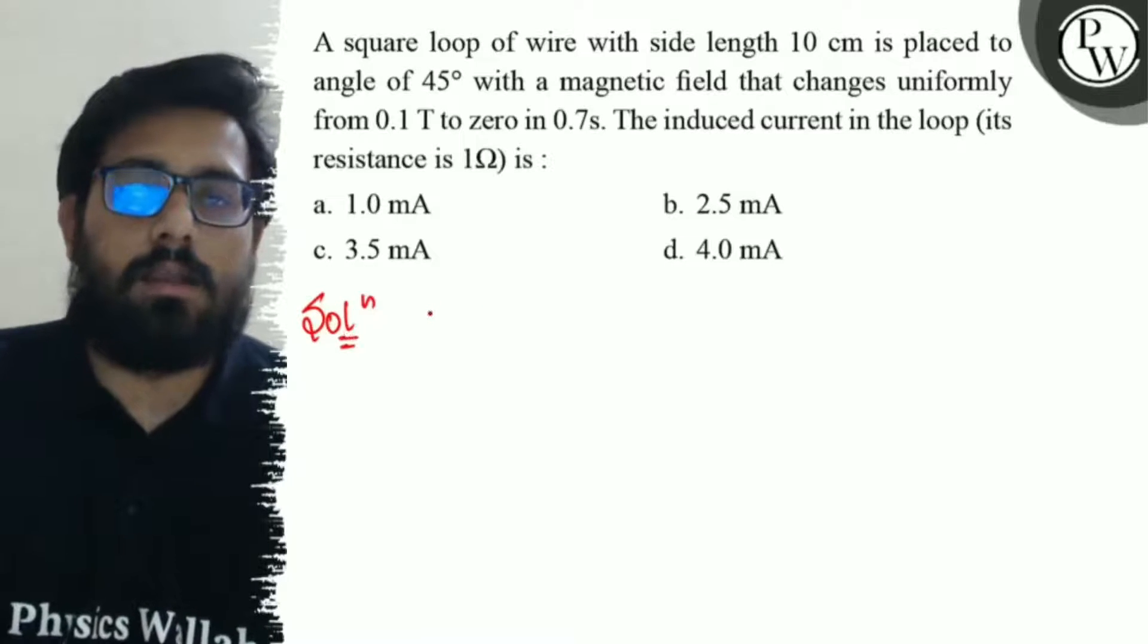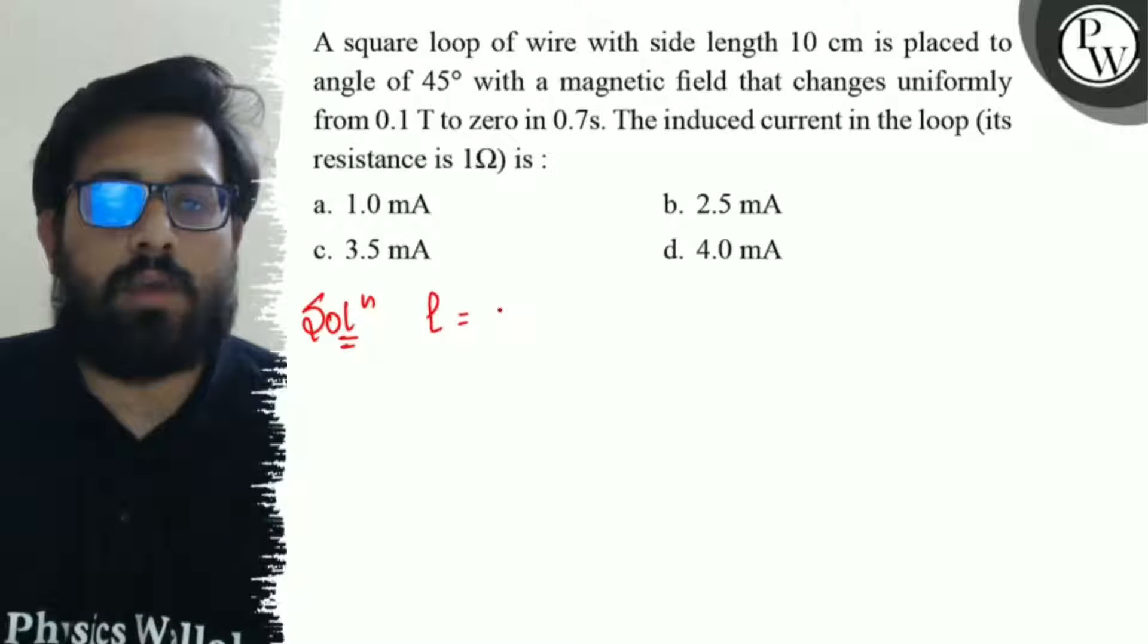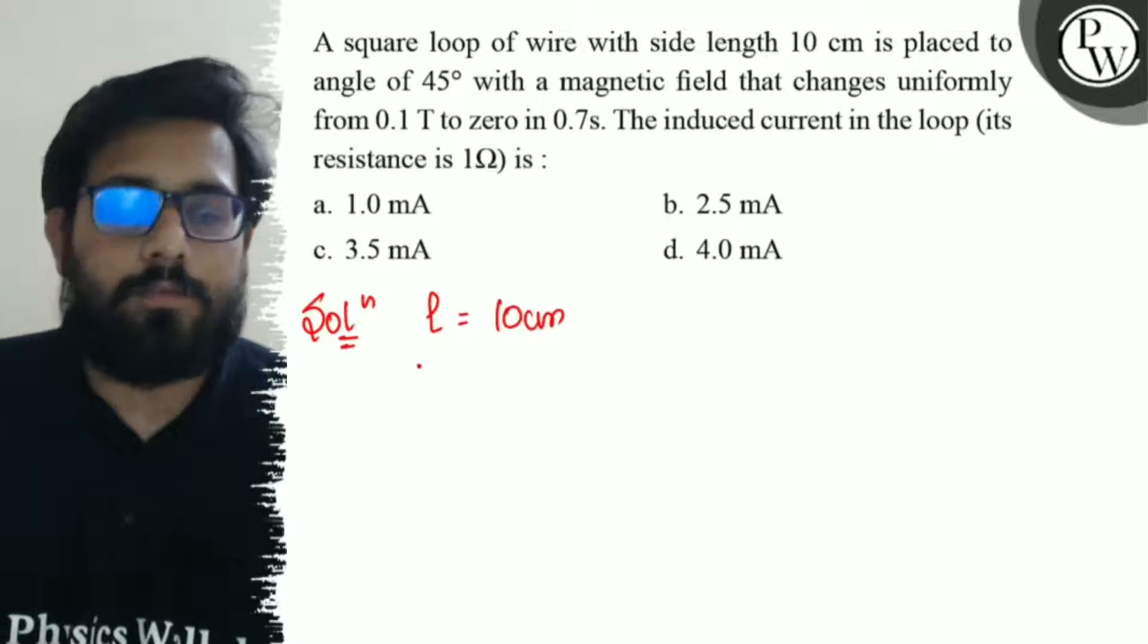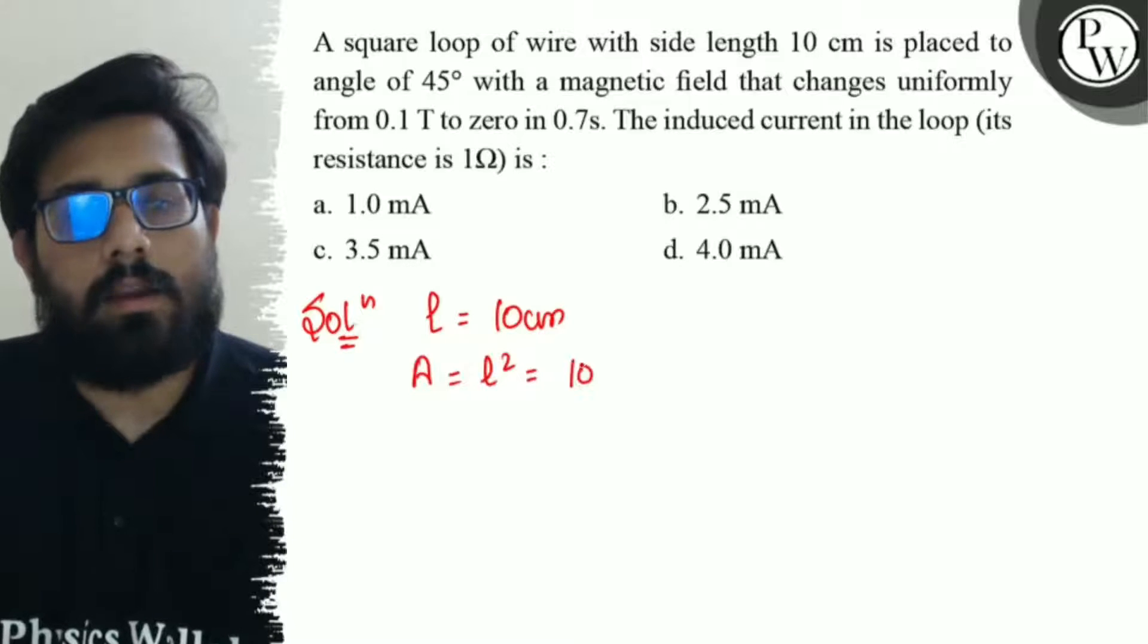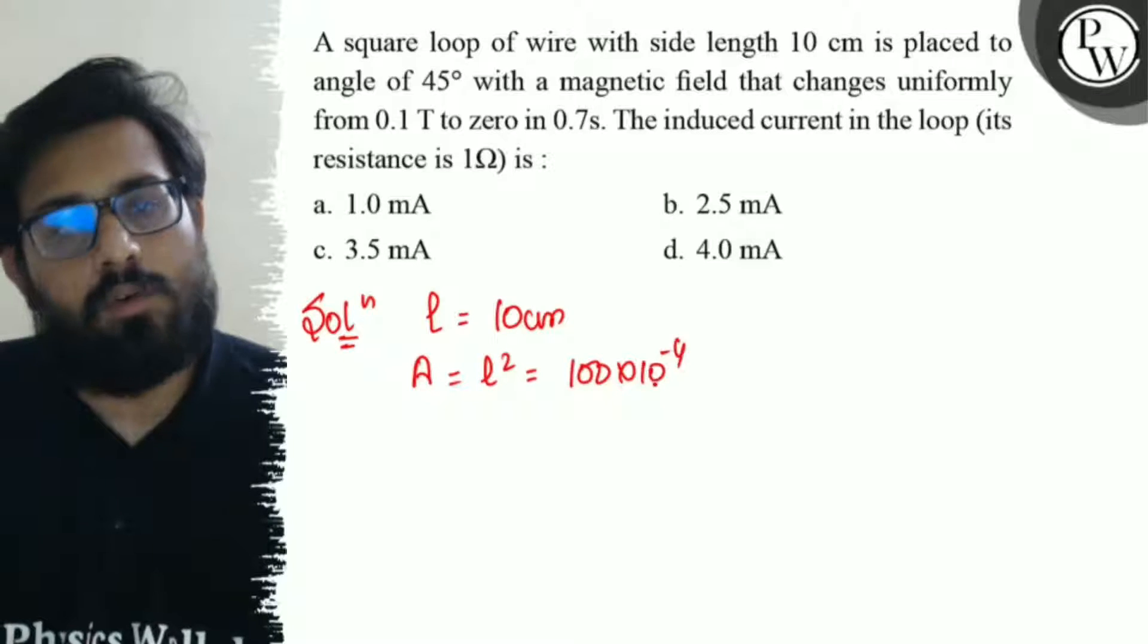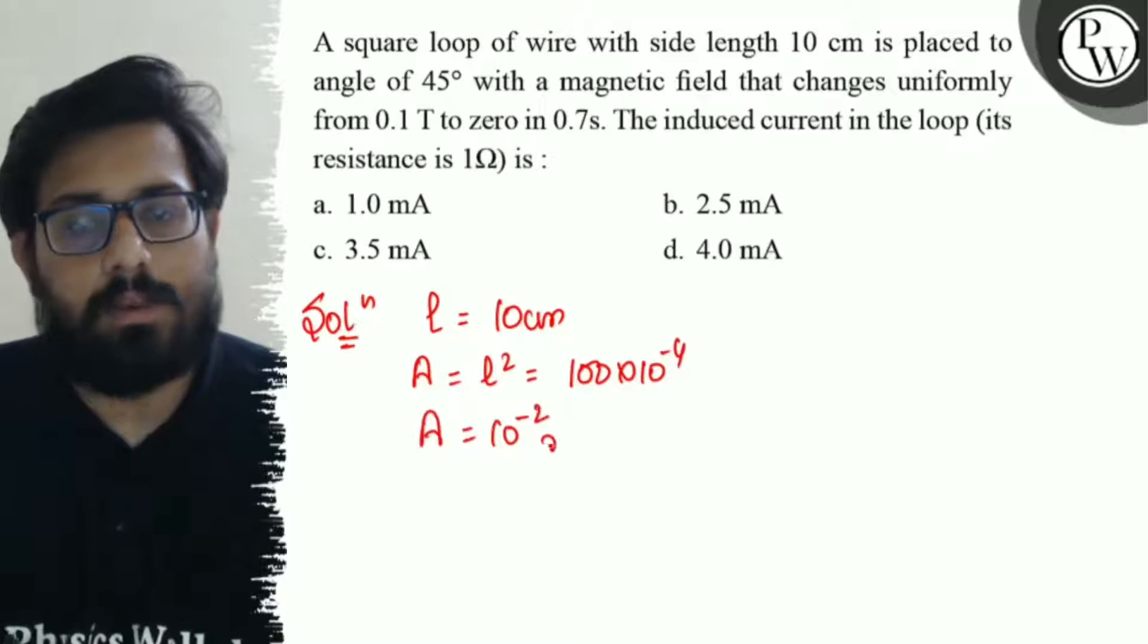So here in this question, the length of the square loop is given as 10 centimeters. So from here area can be written as L squared. So 100 into 10 to the minus 4. So your area comes out to be 10 to the minus 2 square meters.